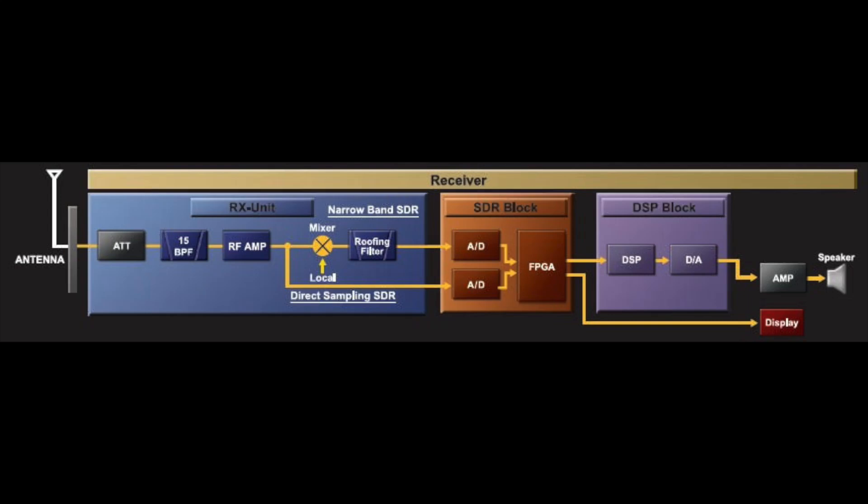The FTDX-10's receiver is called a hybrid SDR, and is very similar to the top-of-the-line FTDX-101 series. It has bandpass filtering, an extremely low noise oscillator, a super heterodyne mixer, and roofing filters ahead of an advanced SDR section. This approach is the reason the FTDX-10 achieves amazing receiver performance, especially in challenging band conditions.